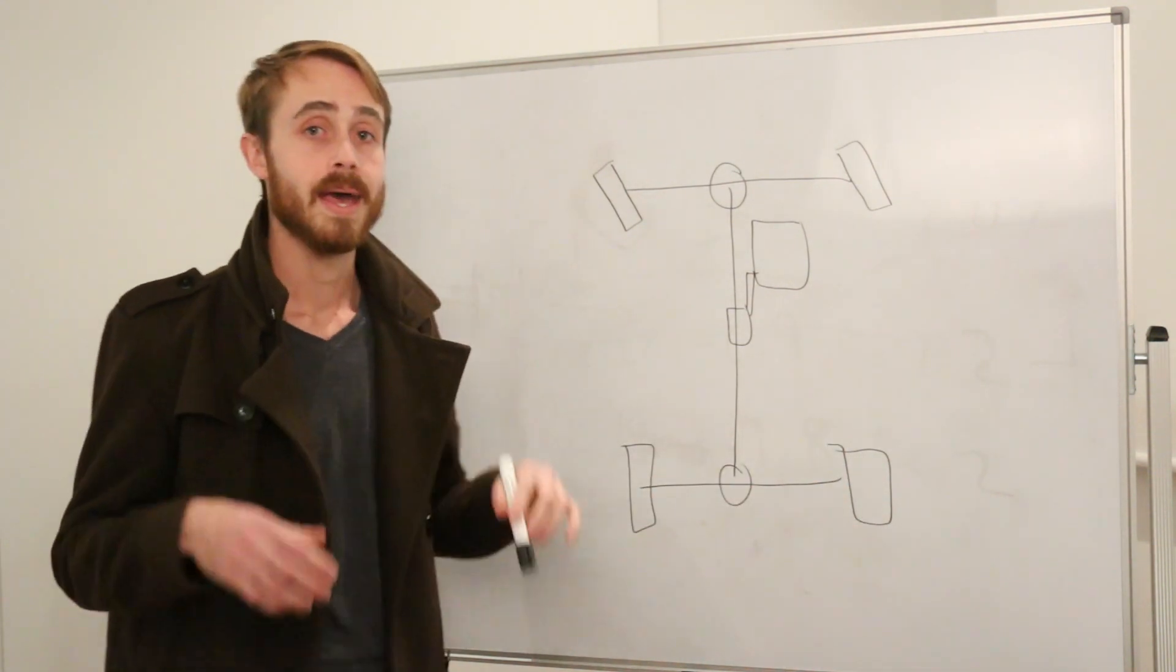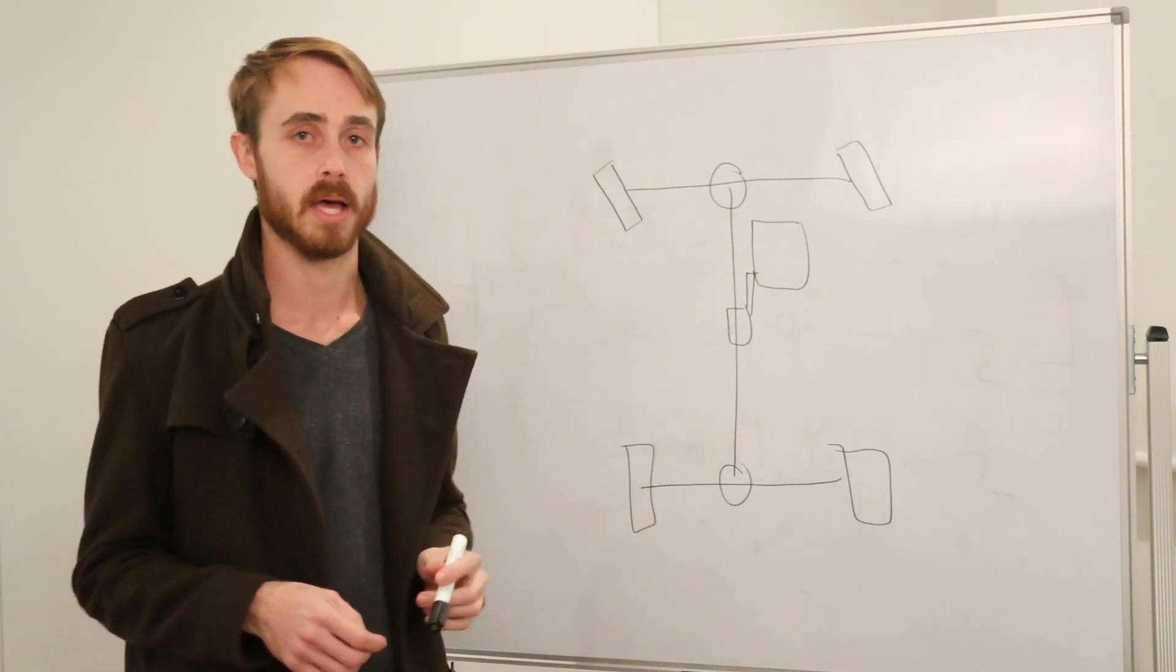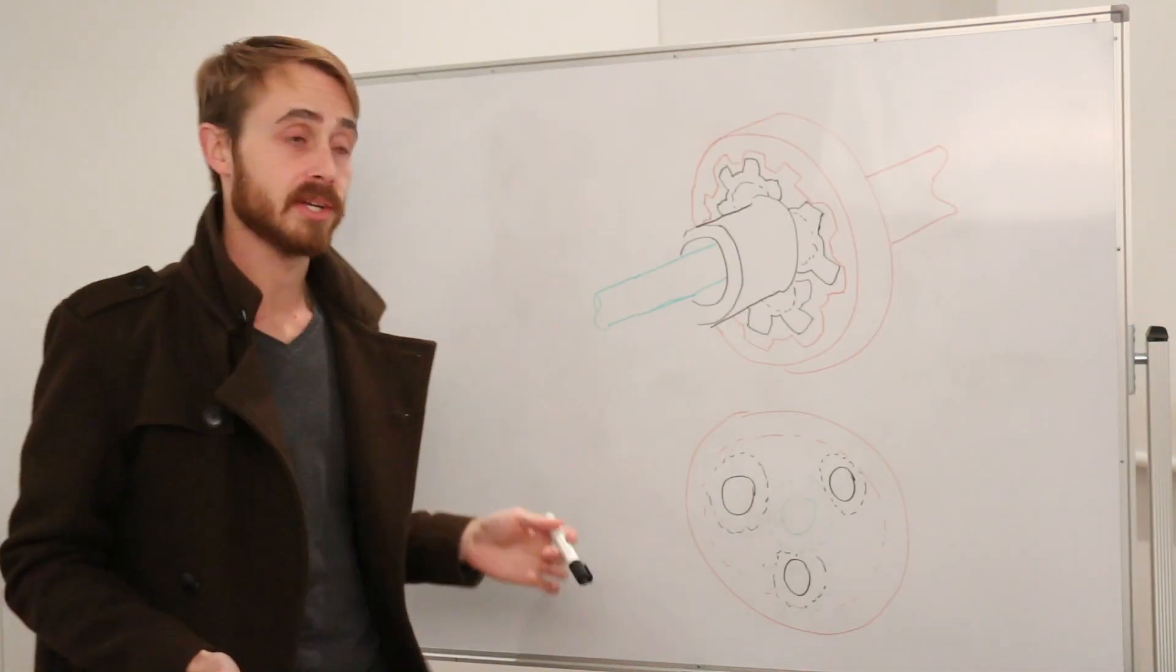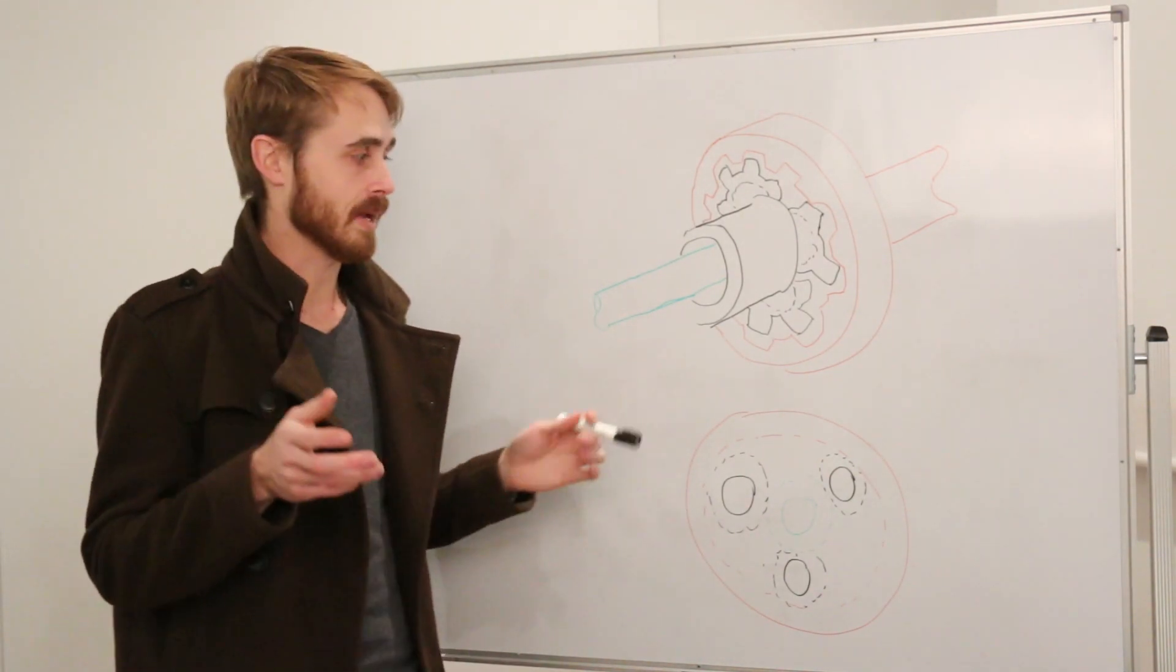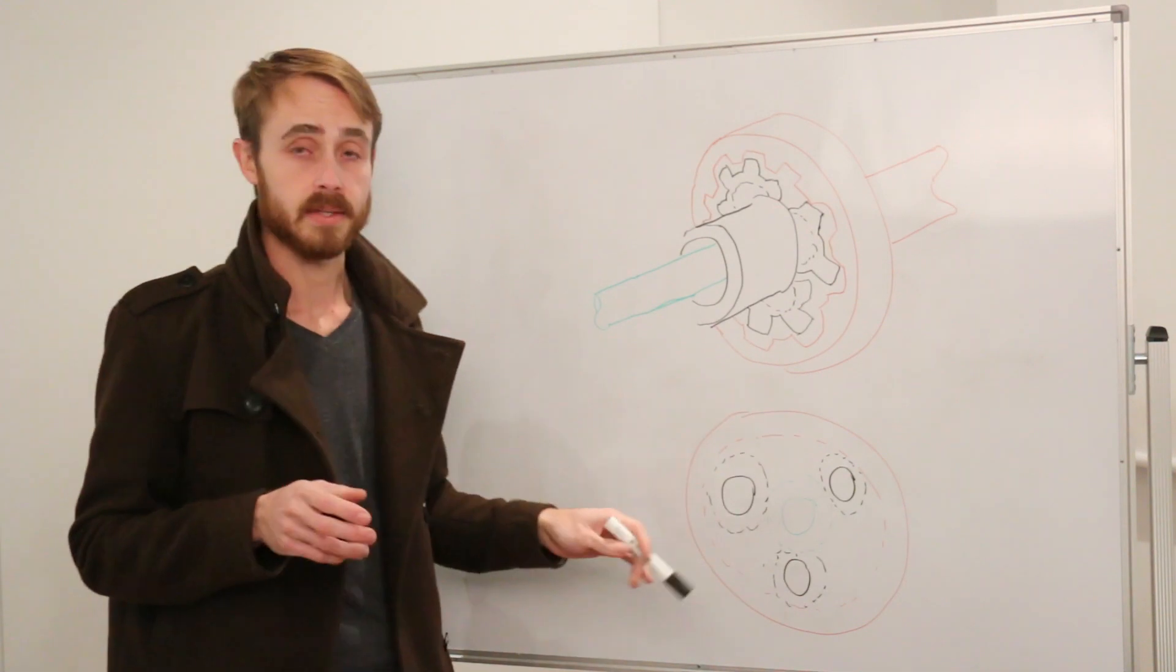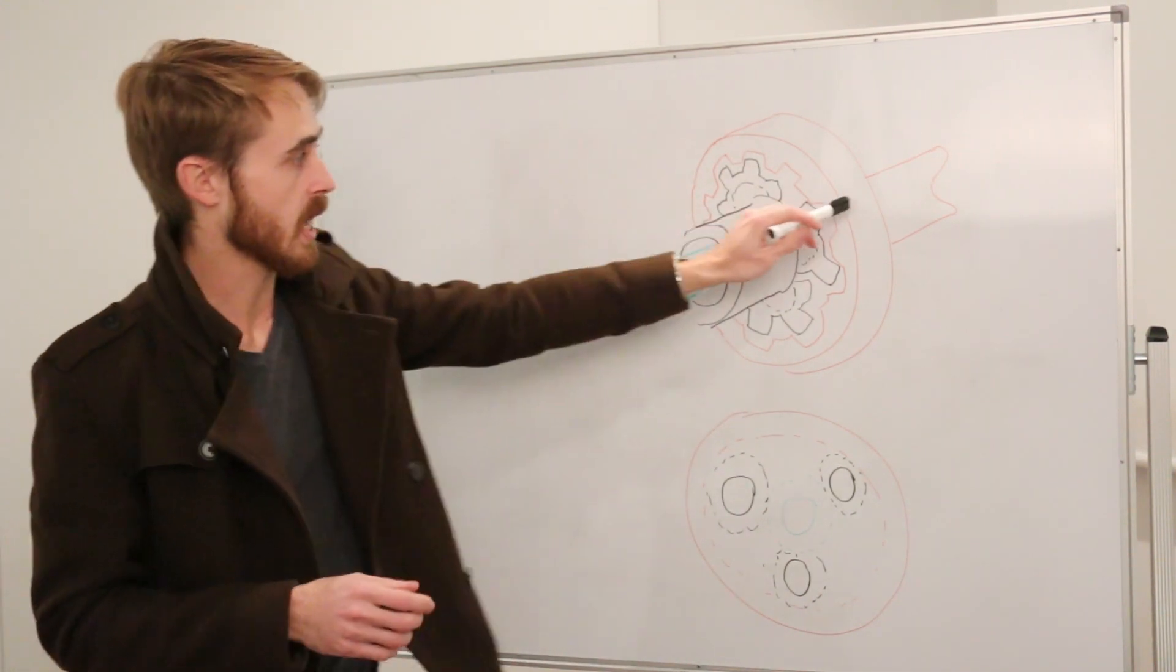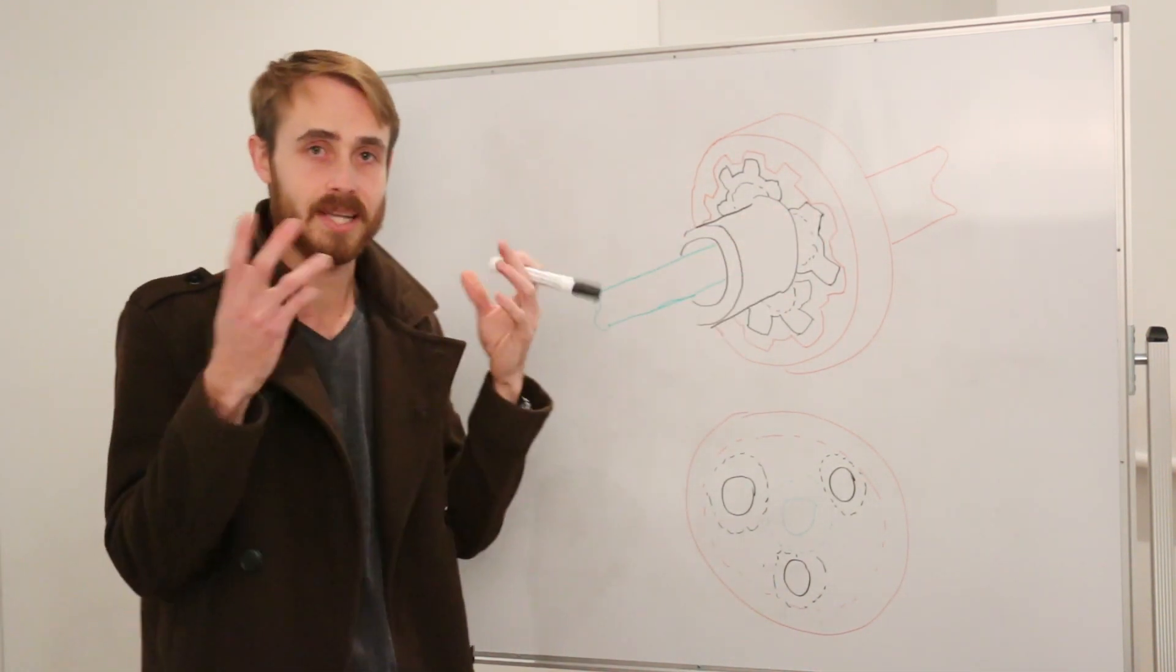So this is where an epicyclic differential or a planetary differential comes in. Epicyclic or planetary gear sets are nothing new. A lot of automatic cars used to run epicyclic sets for their gears. Now the way it works is that we have three essentially gear sets.